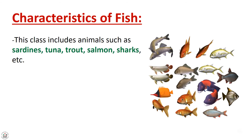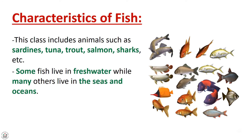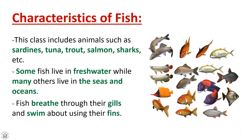Characteristics of fish: this class includes animals such as sardines, tuna, trout, salmon, sharks, etc. Some fish live in fresh water, while many others live in the seas and oceans. Fish breathe through their gills and swim using their fins.